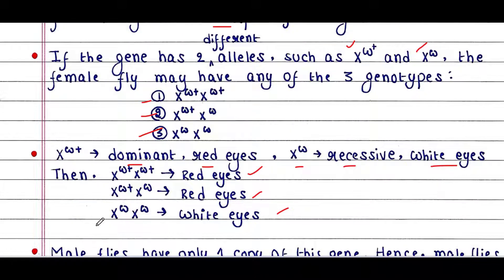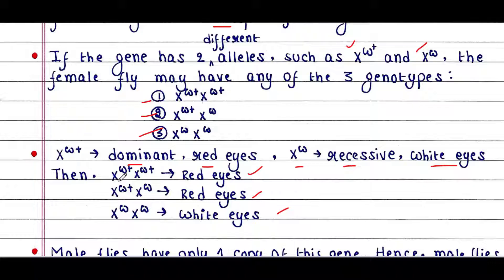There are three types of genotypes for females. The genotype Xw+Xw+ shows the phenotype red eyes. The genotype Xw+Xw also shows the phenotype red eyes. The genotype XwXw shows white eyes, since Xw is the recessive allele and Xw+ is the dominant allele.